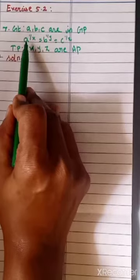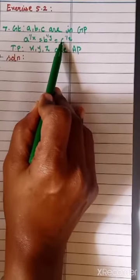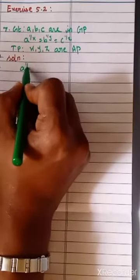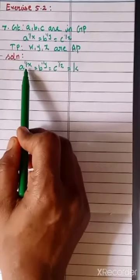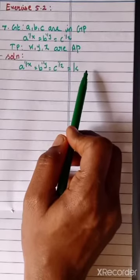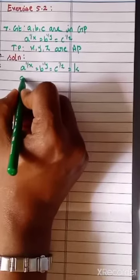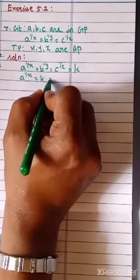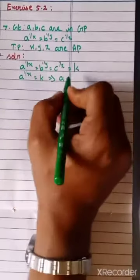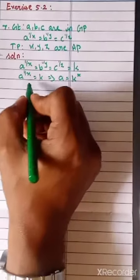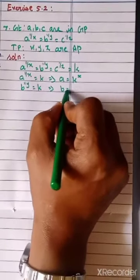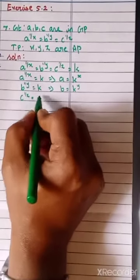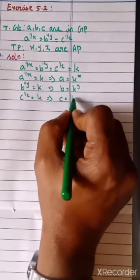Let's see the solution. Here the condition — A power 1 by X equals B power 1 by Y equals C power 1 by Z — we can take it as some constant K. When power goes to the right-hand side it will take a reciprocal. So A power 1 by X equals K implies A equals K power X. Similarly, B power 1 by Y equals K implies B equals K power Y. C power 1 by Z equals K implies C equals K power Z.